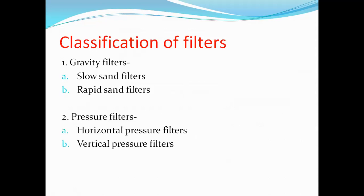There are two main types of filters. First is the gravity filter and second is the pressure filter. Gravity filters are classified into two types: first is the slow sand filter and second is the rapid sand filter. Pressure filters are classified into two types: first is the horizontal pressure filter and second is the vertical pressure filter. These are all the types of filters used for filtration of water in a water treatment plant.